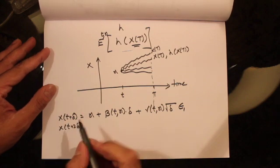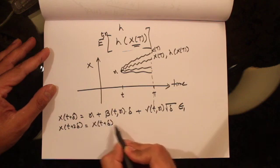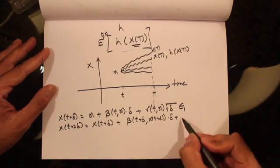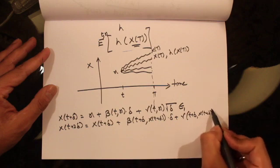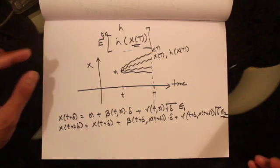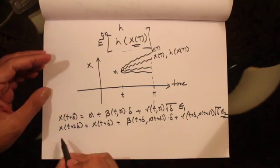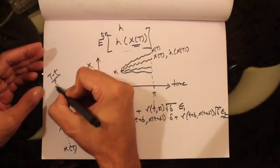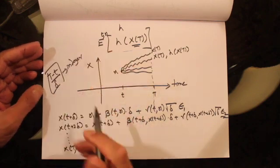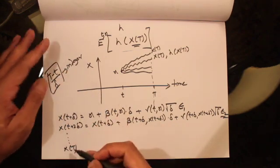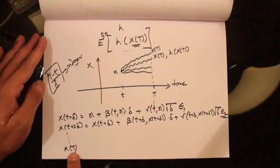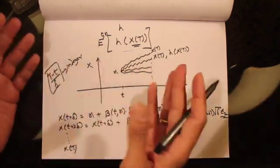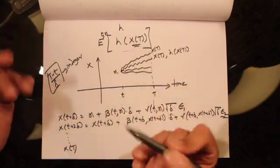Similarly, x(t + 2*delta) is given by x(t + delta) plus beta(t + delta, x(t + delta)) times delta plus gamma(t + delta, x(t + delta)) times the square root of delta times another standard normal random variable. We keep doing this, and finally arrive at x(T), where the assumption is that (T - t) / delta is an integer. We get one realization of x(T) per simulation. Repeating gives multiple paths, and taking the average of h applied to the terminal values gives the expectation.